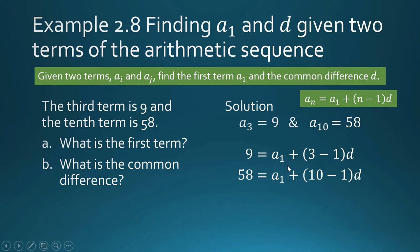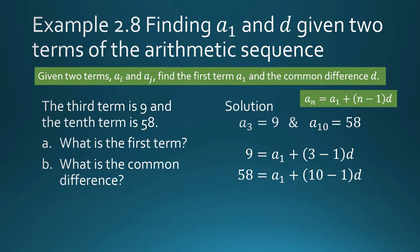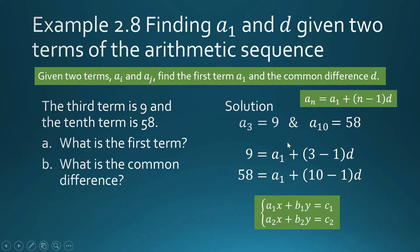The third term equals the first term plus (3 minus 1) times d, so: 9 = a sub 1 + 2d. The tenth term gives us: 58 = a sub 1 + (10 minus 1) times d, or 58 = a sub 1 + 9d. This is a set of two equations with two unknowns, written formally as a system of linear equations.